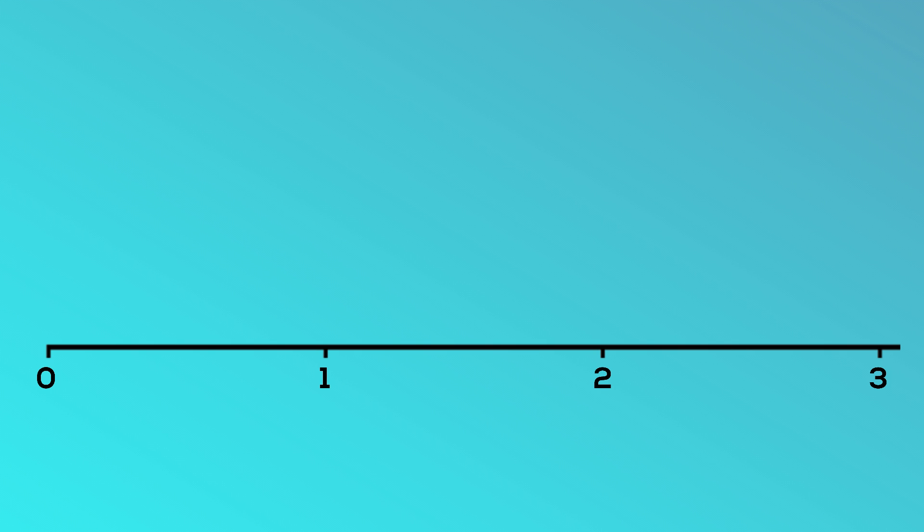It's important that we remember the space between zero and one on our number line represents one whole. Just like the space between one and two represents one whole, the same goes for the space between two and three, and so on.